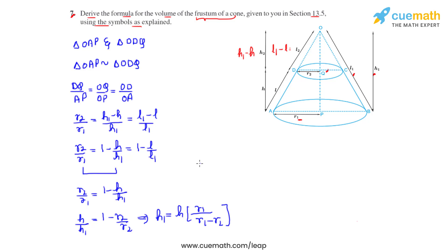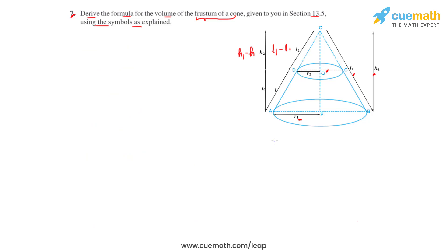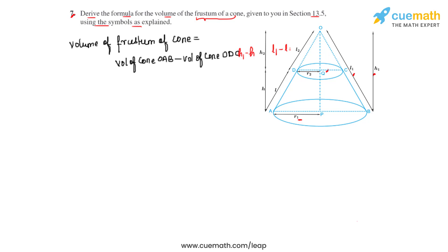The next part is finding the volume of the frustum of the cone. The volume of the frustum equals the volume of the total cone OAB minus the volume of the smaller cone ODC. So: volume of frustum = volume of cone OAB minus volume of cone ODC.